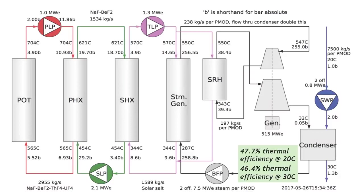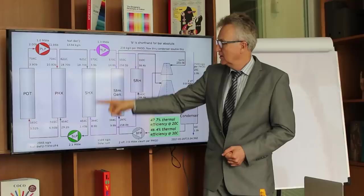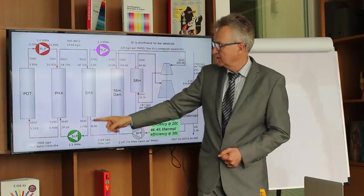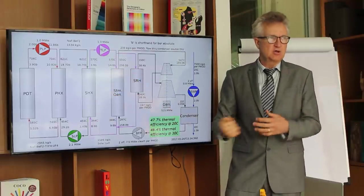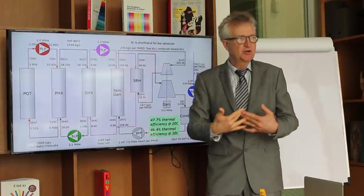The secondary salt is a salt that is compatible with the fuel salt, and is always at higher pressure. So if there ever is a leak in the primary heat exchanger, it will leak secondary salt into the primary loop, rather than the other way around. That way we keep the radioactivity inside the can.